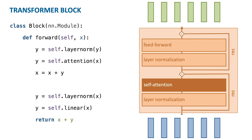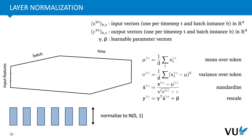The feed-forward layer operates with the same parameters on every token of the input sequence in isolation. This means the only operation that propagates information along the time dimension is the self-attention; the other three operations operate on every input token in isolation. The layer normalization does essentially the same thing as batch normalization, except in another direction in the batch tensor. If we think of our batch tensor as a three-tensor with input features, a batch dimension, and a time dimension, then layer normalization normalizes along only the input features, so each individual vector has mean zero and standard deviation one.